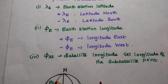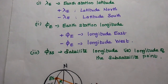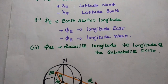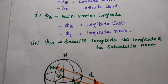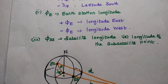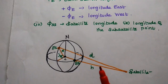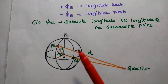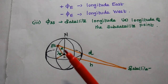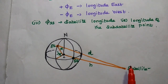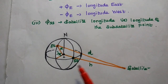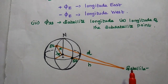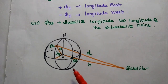The third parameter is phi_ss, which means satellite longitude — that is the longitude of the subsatellite point. Here 'ss' means subsatellite point. This is the general diagram for antenna look angles, where we consider the earth station, the satellite, and the subsatellite point. The subsatellite point means the vertical projection of the satellite on the surface of the earth.